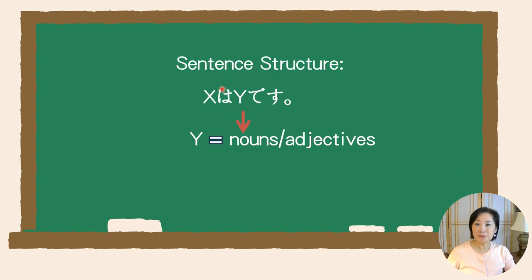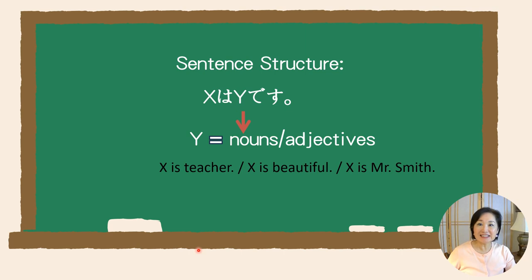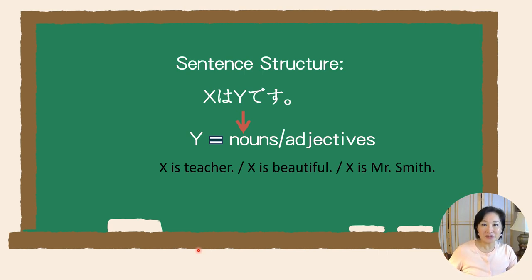In the Y part of the sentence, you can place nouns or adjectives. For instance, with a noun, you could construct a sentence like 'you are a teacher.' Alternatively, if you use an adjective such as beautiful, you can say 'you are beautiful.' However, in today's lesson we will primarily focus on using nouns in the Y slot. The use of adjectives will be explored in future lessons.